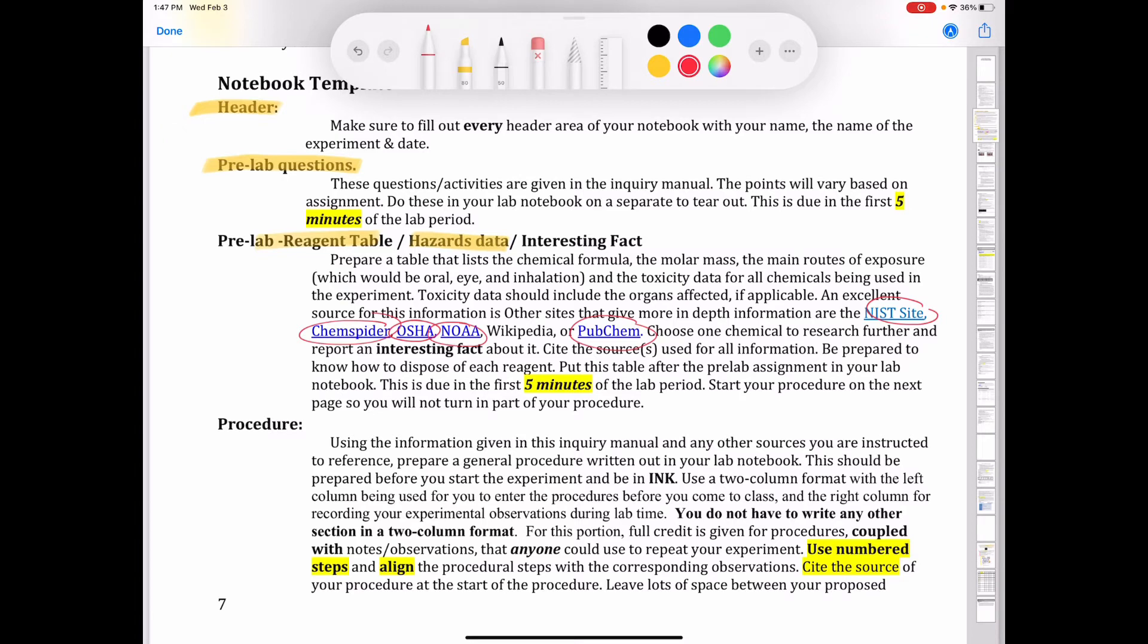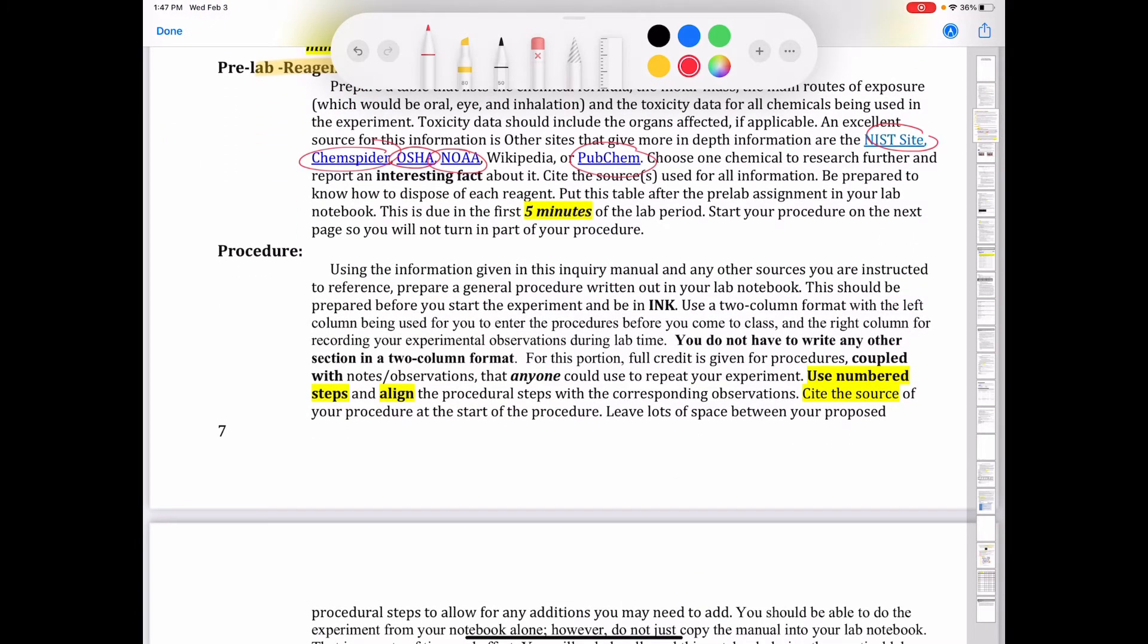Next, you have to have a procedure. The procedure will always start on a new page. Even if you only have one word on the page that precedes it, you're going to start the procedure on a new page. And the way that we write our procedures is in what's called the two-column format, where you have your lab notebook page. You have your header information at the top, and then you write procedure on one side and observations on the other, and you divide the page in two.